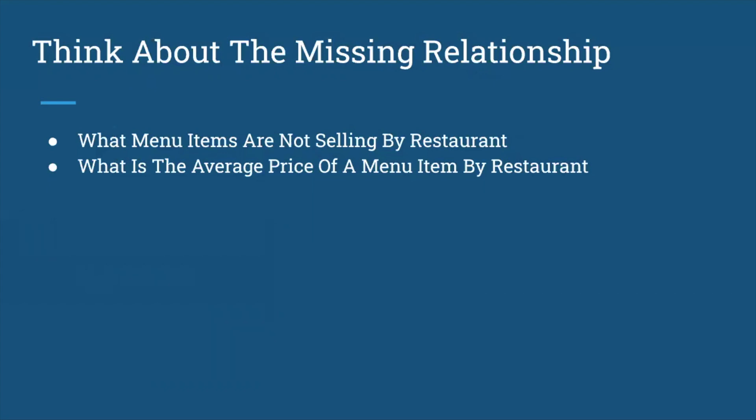If someone asks 'what menu items are not selling by restaurant?' — you can't answer that question. There's no way to answer it because you didn't connect restaurant to menu in any way. Similarly, you can't say what is the average price of a menu item by restaurant, because you don't know what menu items are connected to what restaurant until someone actually orders that item. This means if you want to do research into what's not getting ordered, you can't — which from an analytics perspective is very important, especially if you want to sell analytics back to restaurants.